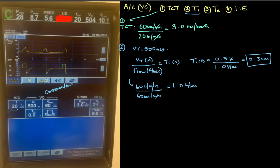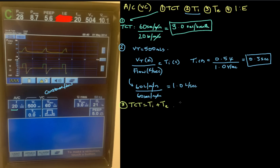Now let's calculate expiratory time. Total cycle time equals inspiratory time plus expiratory time — we know two of those so we can solve for the third. Expiratory time equals total cycle time minus inspiratory time, which equals 3 seconds minus 0.5 seconds. So our expiratory time is 2.5 seconds.